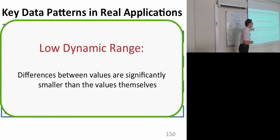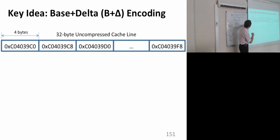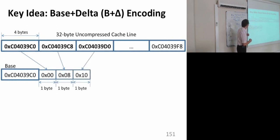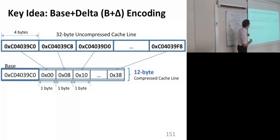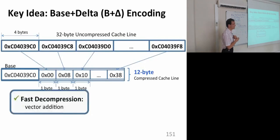The key idea is base plus delta encoding. Consider a 32-byte uncompressed cache line with 4-byte values that are similar to each other. We take one of them as the base and compute differences from that base. For the first element the difference is zero, the next is 8, then 0x10, and so on. Now we can encode this 32-byte uncompressed cache line with only 12 bytes — a single base and eight 1-byte differences from that base. You save 20 bytes in this case.